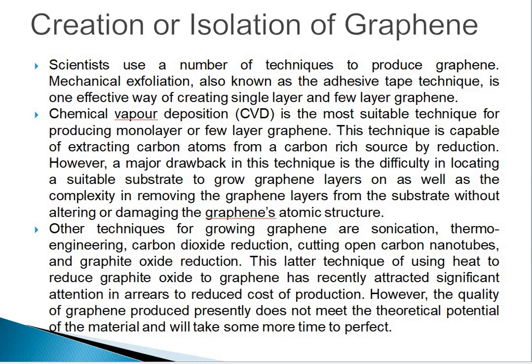However, a major drawback of CVD is the difficulty in locating a suitable substrate to grow the graphene layer on, as well as the complexity in removing the graphene layer from the substrate without altering or damaging graphene's atomic structure. Other techniques for growing graphene include sonication — the act of applying sound energy to carbon components for purposes such as extracting multiple components from them — as well as thermoengineering, carbon dioxide reduction, cutting open carbon nanotubes, and graphite oxidation-reduction.